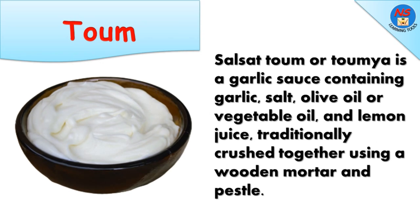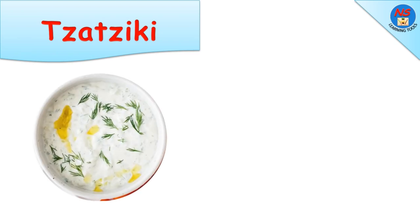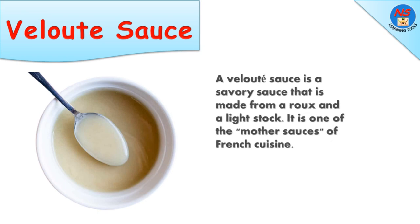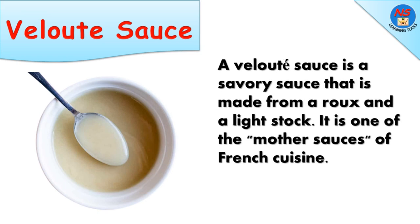Toum is a garlic sauce containing garlic, salt, olive oil or vegetable oil, and lemon juice, traditionally crushed together using a wooden mortar and pestle. Tzatziki, also known as cacık, is made of salted strained yogurt or diluted yogurt mixed with cucumbers, garlic, salt, olive oil, sometimes vinegar or lemon juice, and herbs. Velouté sauce is a savory sauce made from a roux and a light stock; it is one of the mother sauces of French cuisine.